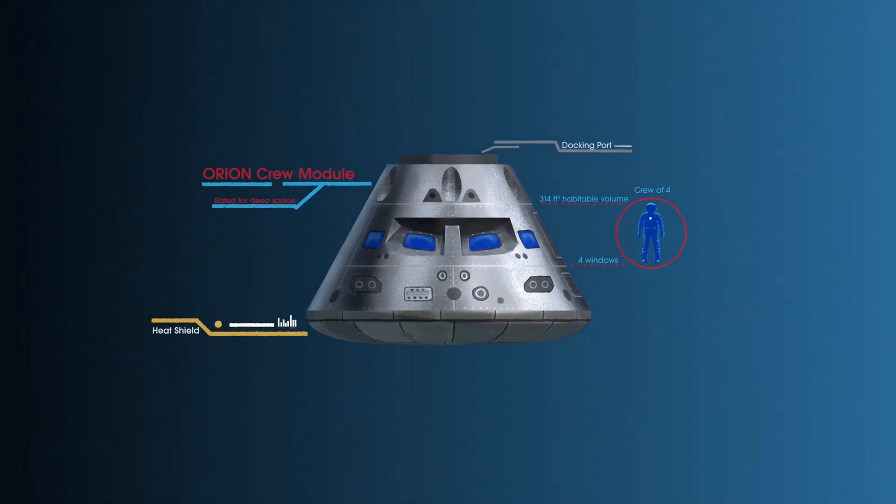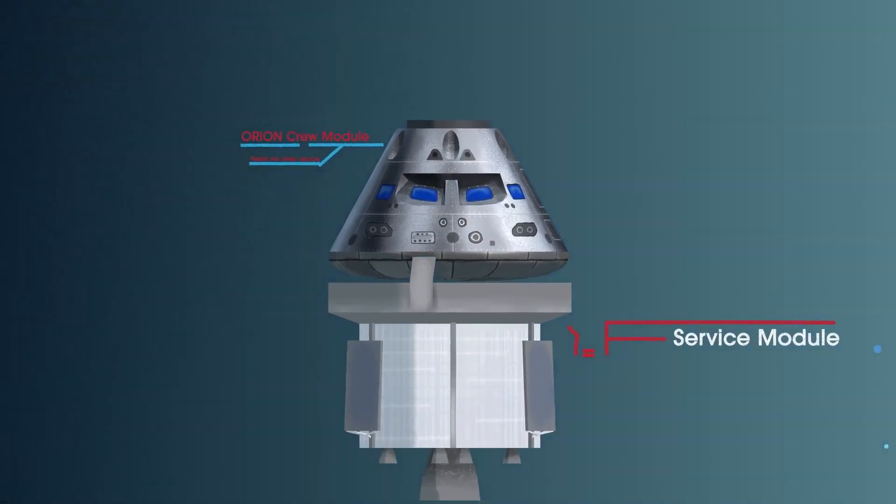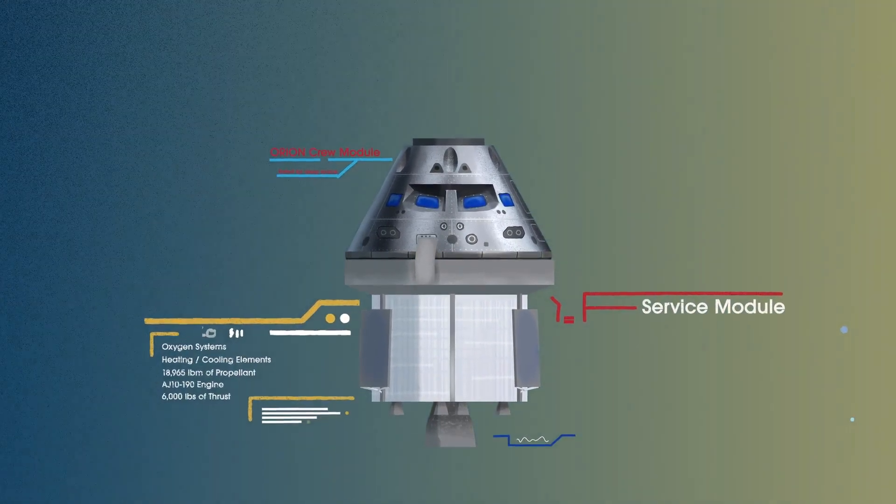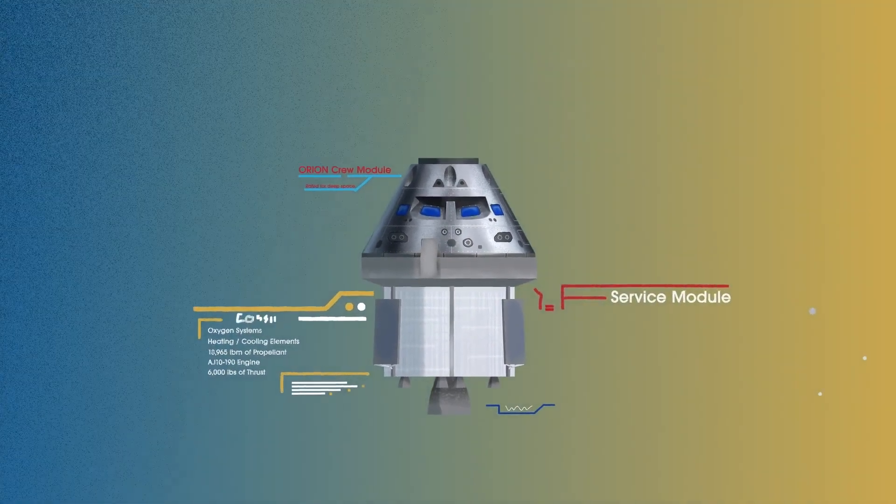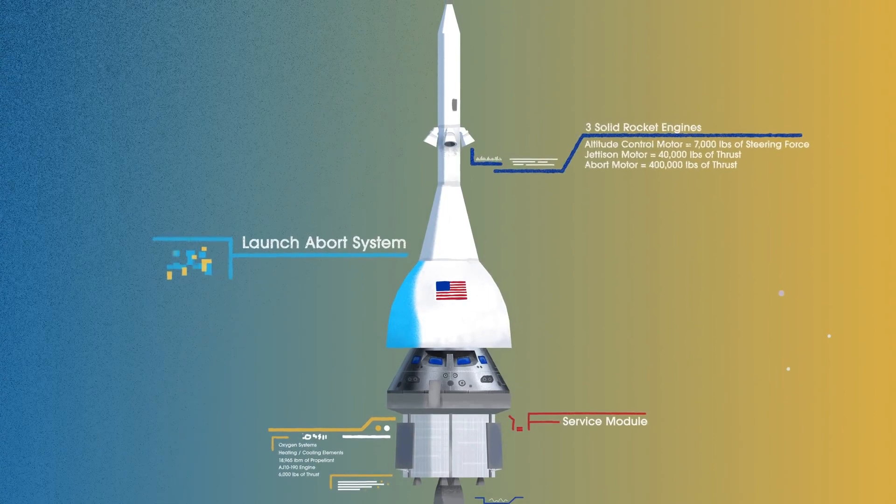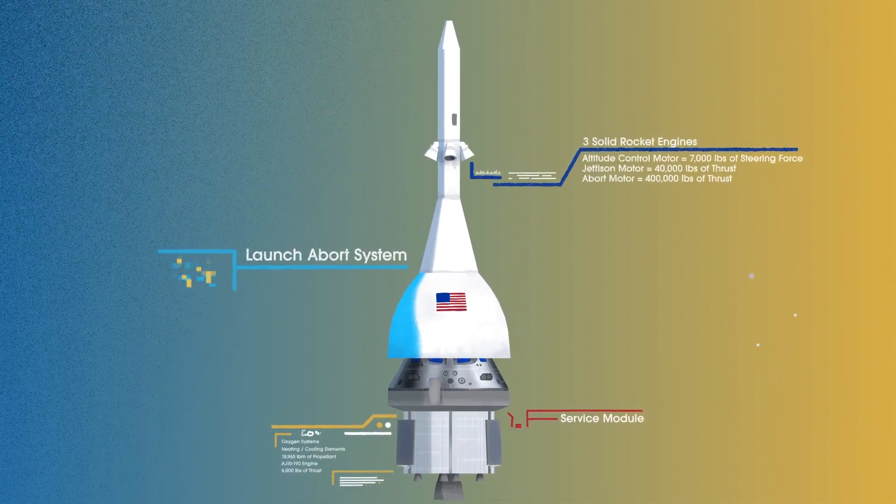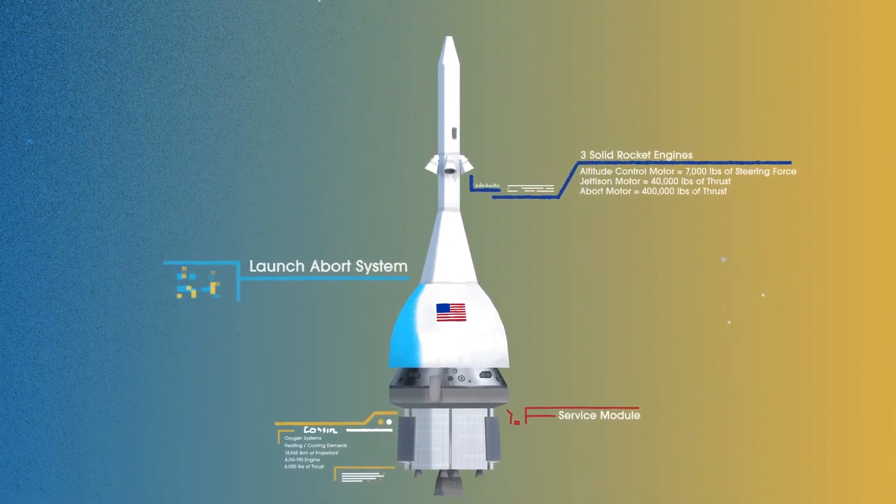The crew module, where up to four astronauts will live and work throughout the flight. The service module, with life-support systems for the crew and its own engine and fuel reserves, and a launch abort system, with engines capable of pulling the crew module to safety during launch should anything go wrong.